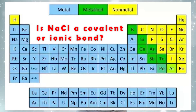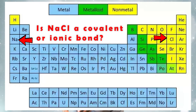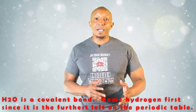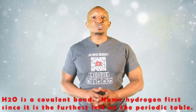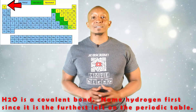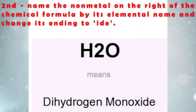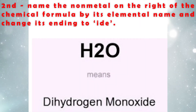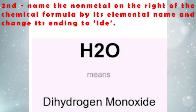If the question asked if NaCl was a covalent or ionic bond, you can tell that Na (sodium) is a metal and Cl (chlorine) is a non-metal, so this would let you know it is an ionic bond. Since we now know that H2O is a covalent bond, we would then name the hydrogen first since it is the furthest to the left on the periodic table. Second, we will name the non-metal on the right of the chemical formula by its elemental name and change the ending to IDE.